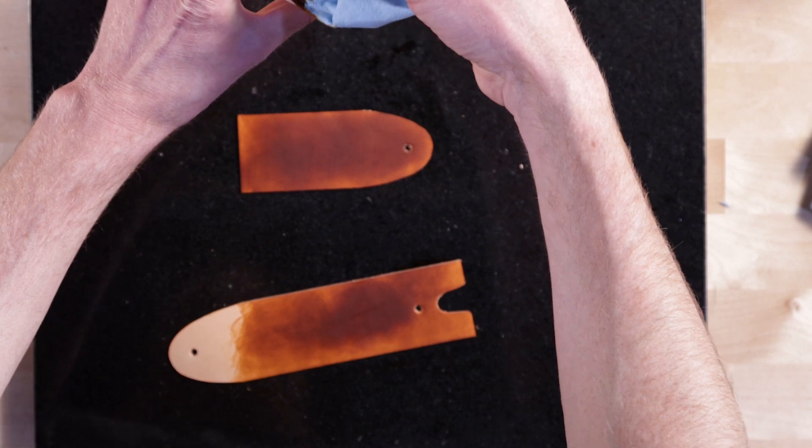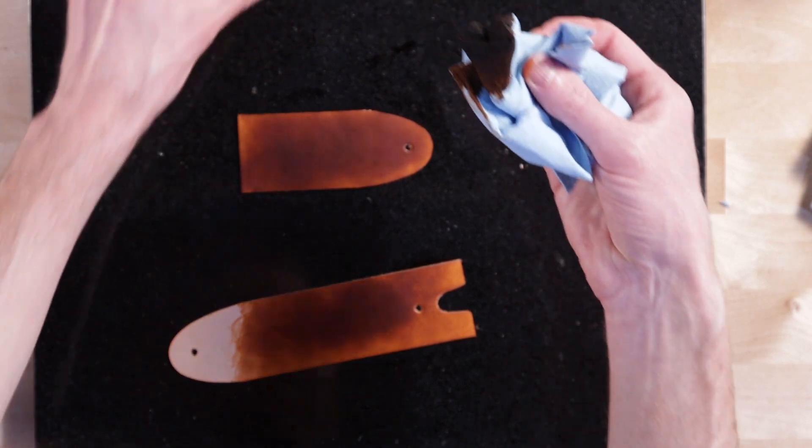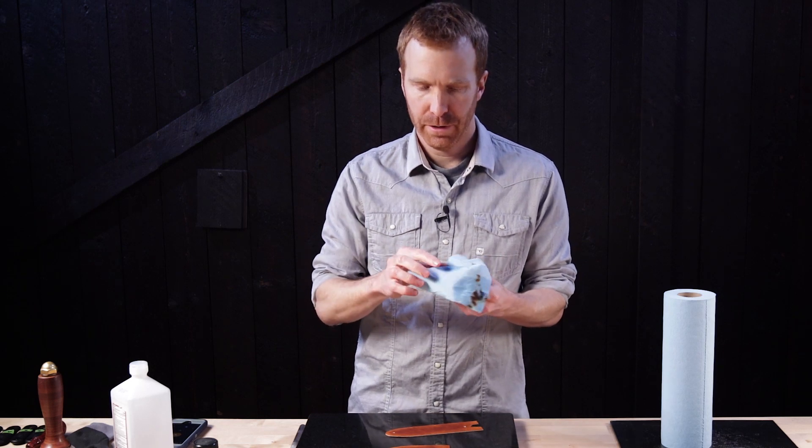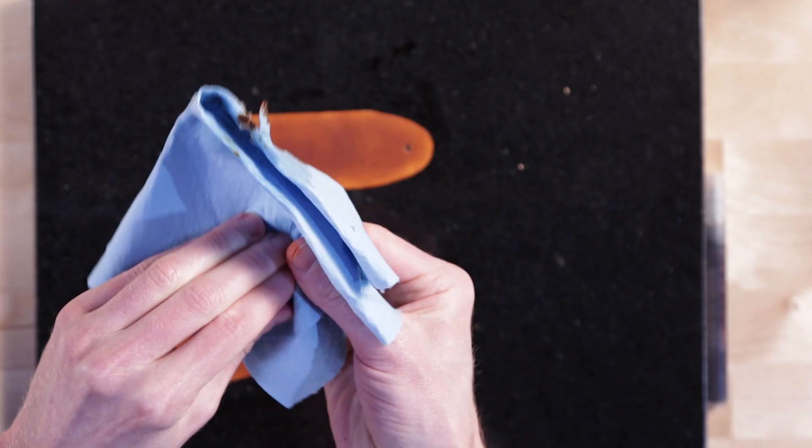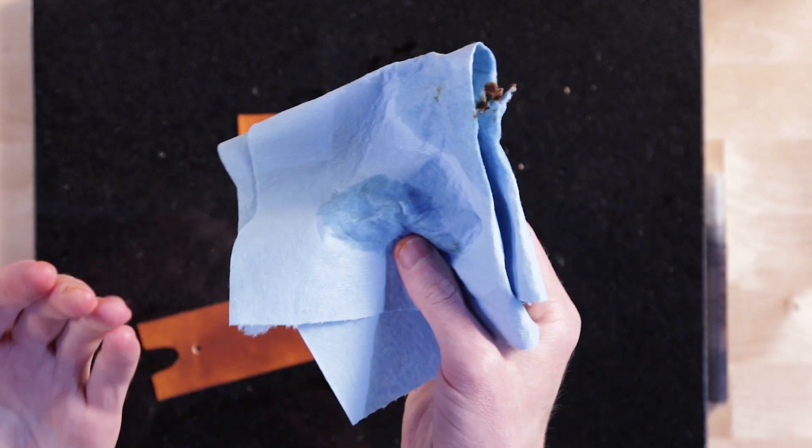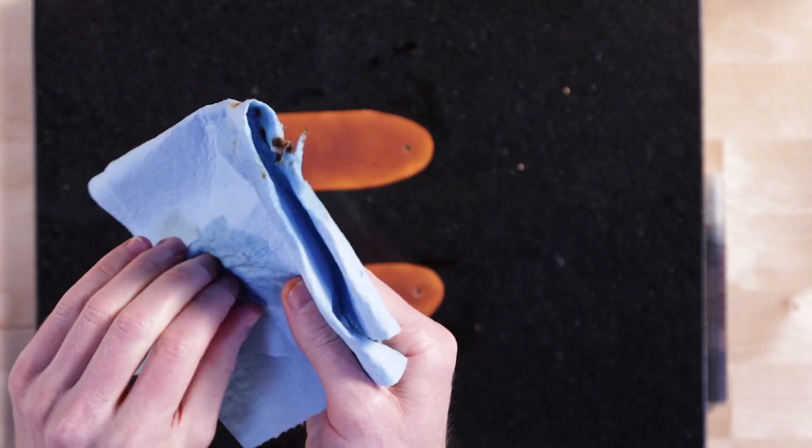You know, when you get it perfectly uniformly dyed, it tends not to look quite as nice in my opinion. All right, a little alcohol on the paper towel will help take off the dye that got on your fingers. If you're going to do a lot of dyeing, I'd probably put on a pair of gloves first.